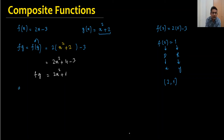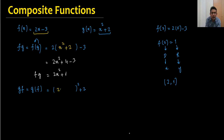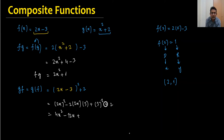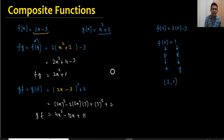If they ask to find gf, that means we are substituting f into g. g is x² + 2, so in the place of x I will put the whole equation of f which is 2x - 3. We simplify using the perfect square formula: (2x - 3)² + 2 = 4x² - 12x + 9 + 2 = 4x² - 12x + 11. This is called gf.